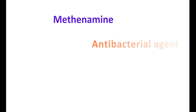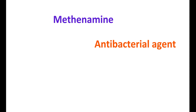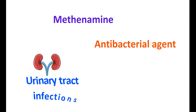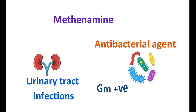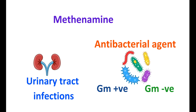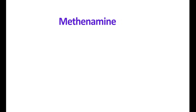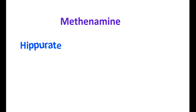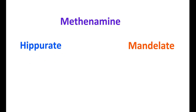Methenamine is one of the antibacterial agents used to treat urinary tract infections. This medication is effective against both gram-positive as well as gram-negative bacterial infections. It is available in the form of two salts: one is hippurate and the second one is mandelate. Methenamine is also called mandelamide.